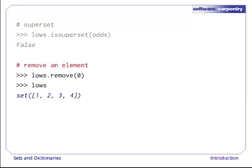Now let's remove the 0 from Lowe's, leaving the set of integers 1, 2, 3, and 4. This is similar to deleting an element from a list, but there's an important difference. When deleting from a list, you specify the location of the element to delete. When deleting from a set, you must specify the value you want to take out. If that value isn't in the set, this method does nothing.